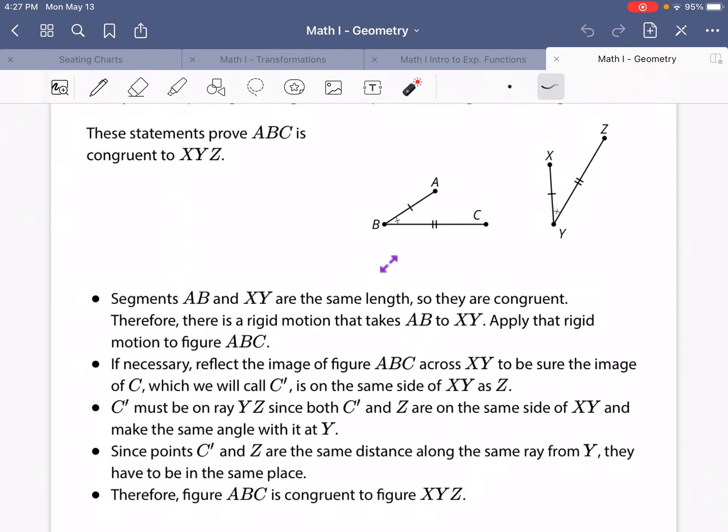Segment AB and XY are the same length, so they are congruent. That's literally what it means for two segments to be congruent. And since we know they're congruent, there is a rigid motion that takes AB over to XY so that they line up perfectly with each other.